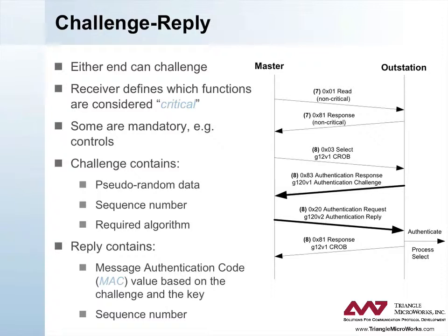In this example, the master sends an authentication reply object in reply to the challenge. Since the DNP3 terminology of request and response still applies, this reply object is transmitted using an authentication request function code. This may be confusing, but it helps to remember that in DNP3, masters always transmit requests and outstations always transmit responses. The authentication reply object contains the MAC, which the outstation will compare to the one it calculates internally.